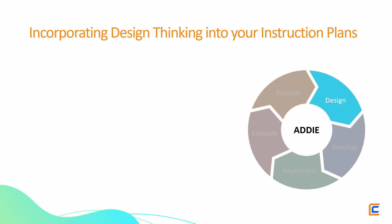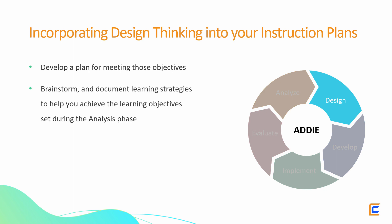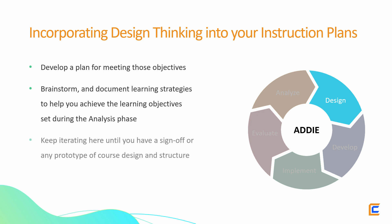In the design phase, you will develop a plan for meeting those objectives. To apply design thinking during the design phase, brainstorm and document learning strategies to help you achieve the learning objectives set during the analysis phase. Keep iterating until you have a sign-off or a prototype of course design and structure. Closely work with all the stakeholders to ensure that your structure flows well and helps learners achieve the learning objectives.